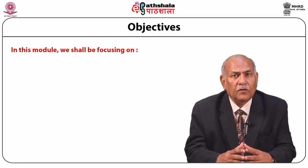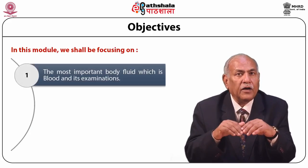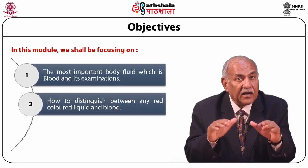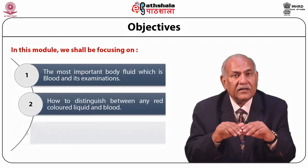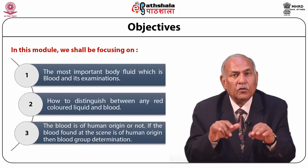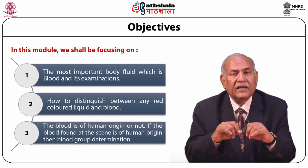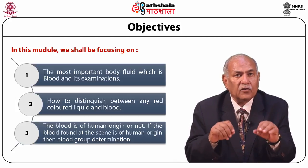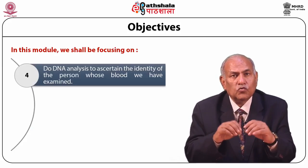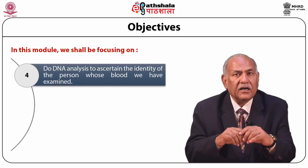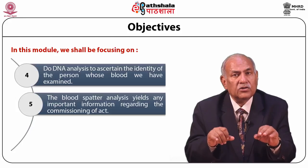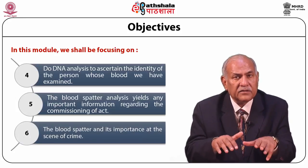The objectives of this module are to focus on the most important body fluid, which is blood, and its examinations. Students will learn how to distinguish between any red colored liquid and blood, whether the blood is of human origin, and if so, how to determine the blood group. We will further do DNA analysis to ascertain identity, and study blood spatter analysis for information regarding the commission of an act.